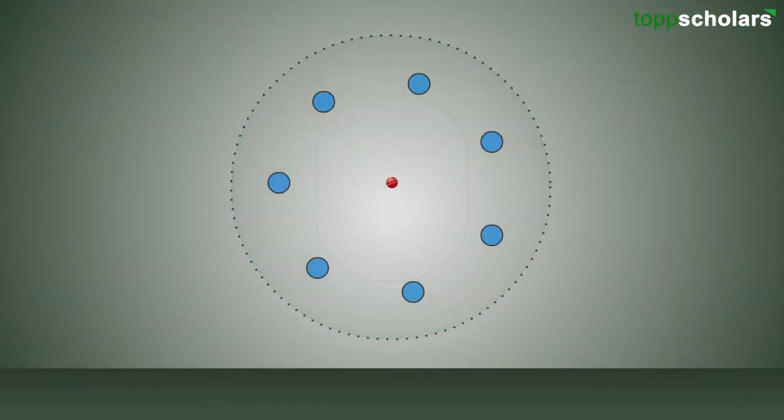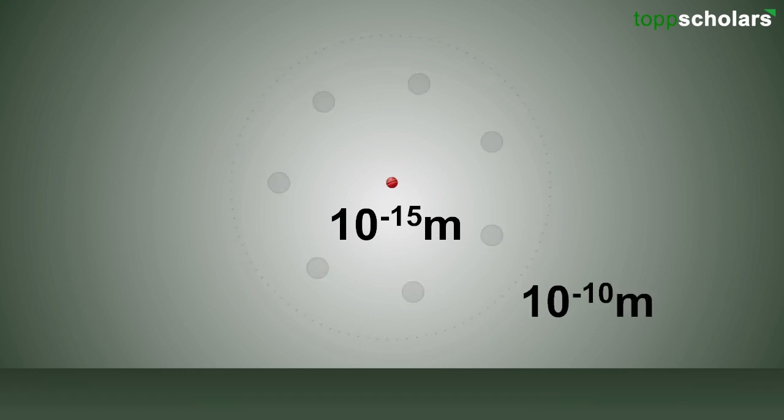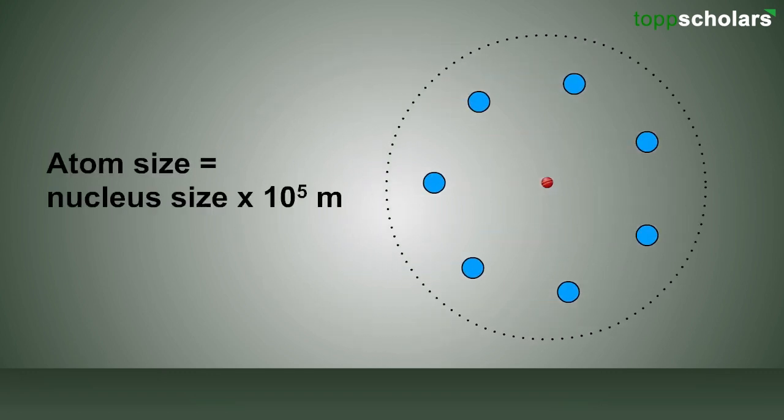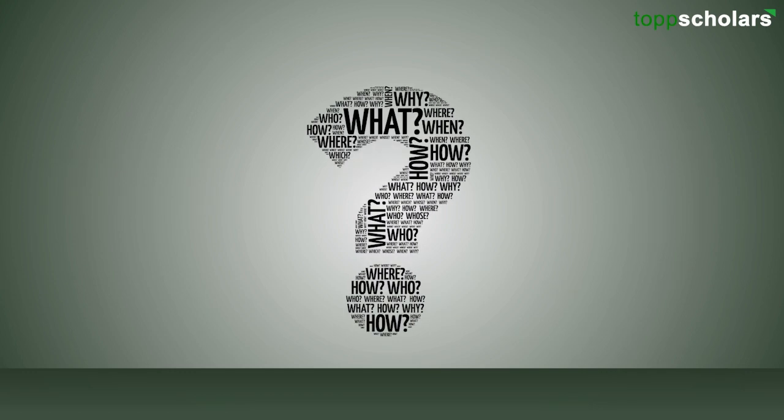Let us imagine the nucleus as a cricket ball—then the entire stadium would be the size of the atom. Further calculations revealed the size of the nucleus to be 10^-15 meters and the size of the atom to be 10^-10 meters. The atom size was 10^5 times greater than the nucleus size.